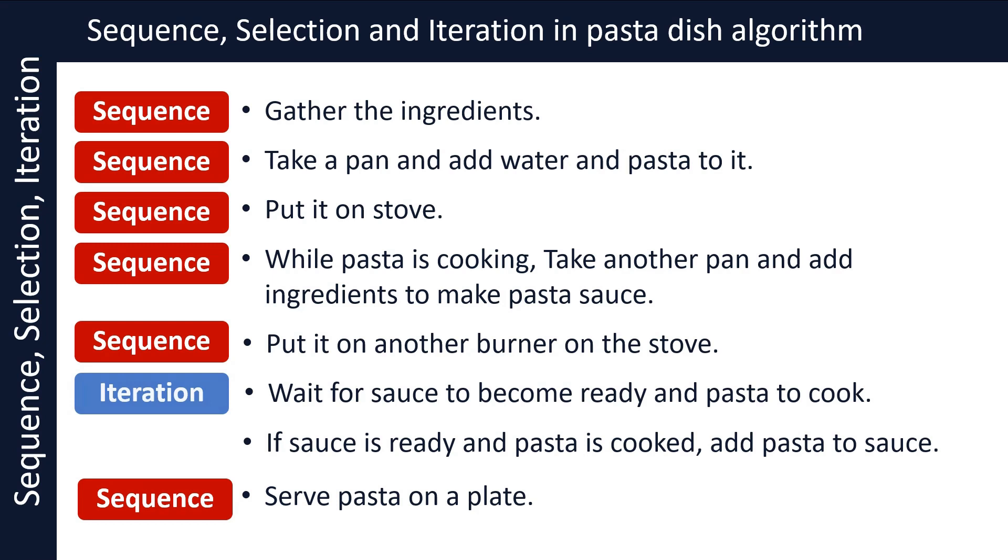If sauce is ready and pasta is cooked shows us use of the selection construct. Here we are asking questions such as is pasta cooked and is sauce ready, and when the answer is true we mix the pasta and sauce. Otherwise, we keep cooking one or both items until they become ready.